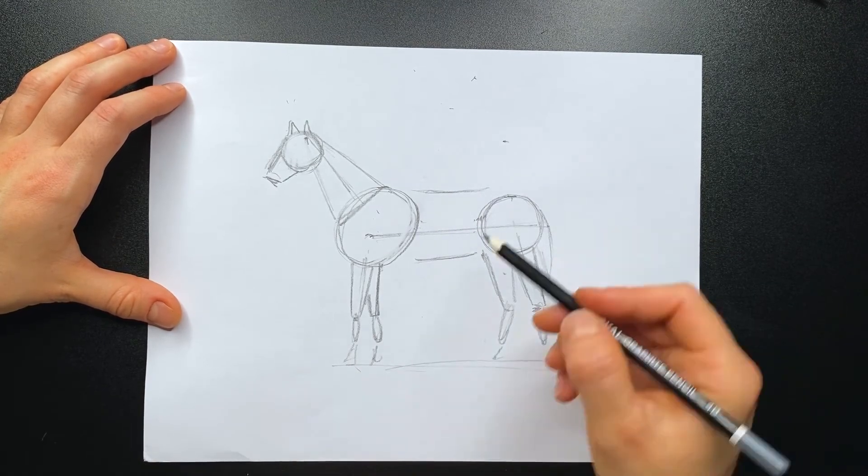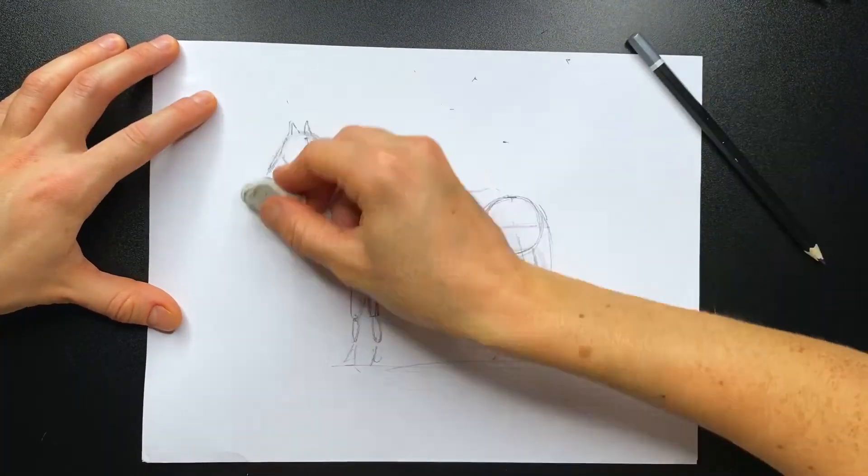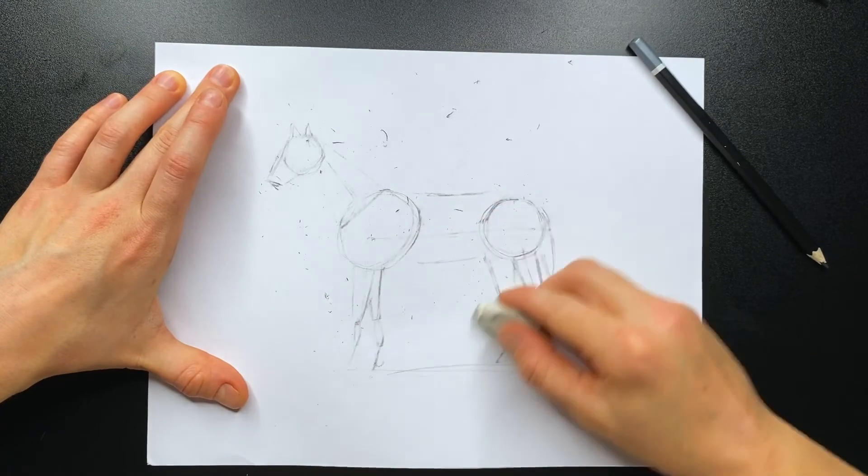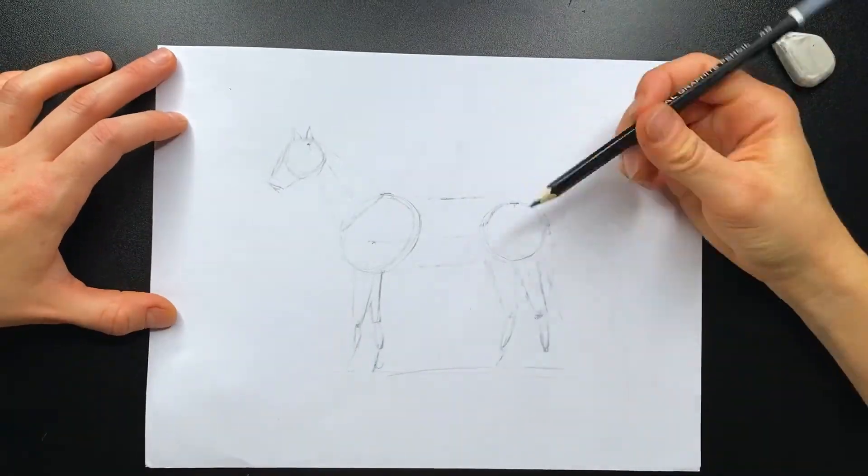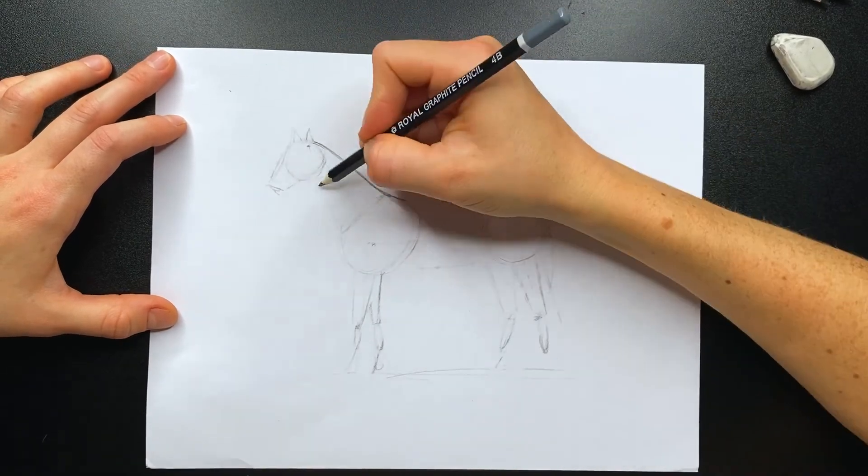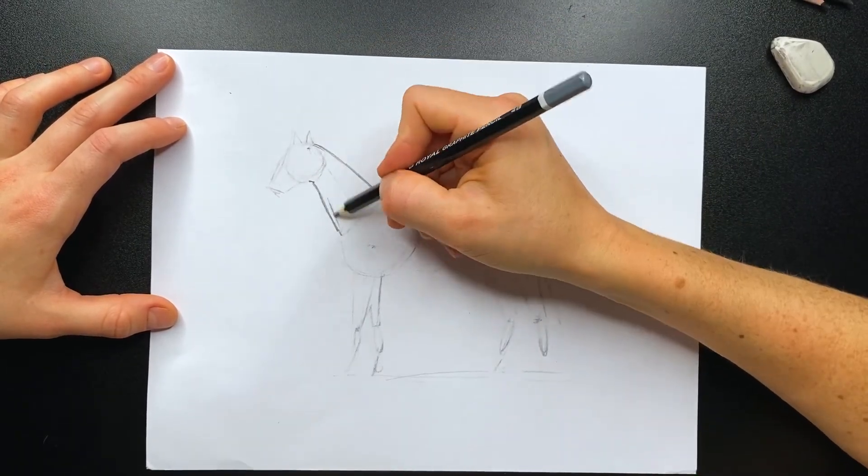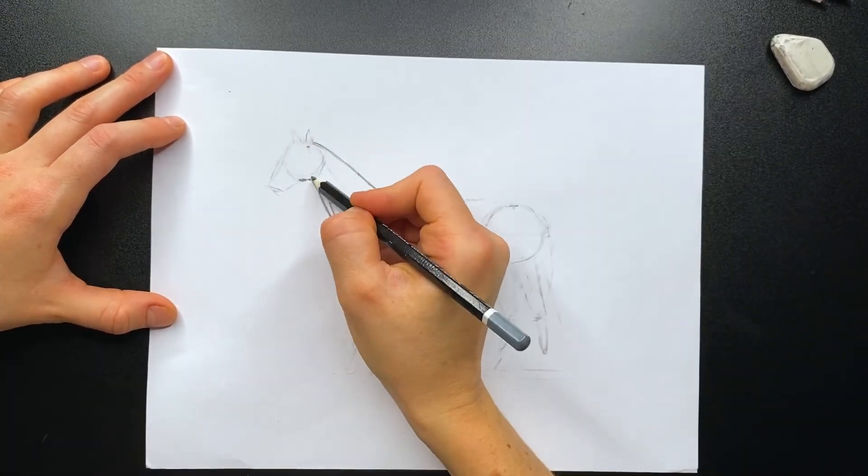As we did earlier in our other animal drawings, erase your sketch lightly, making sure you can still see the shapes you drew, as they will help you draw the body proportionally. Now draw your horse, adding some details.